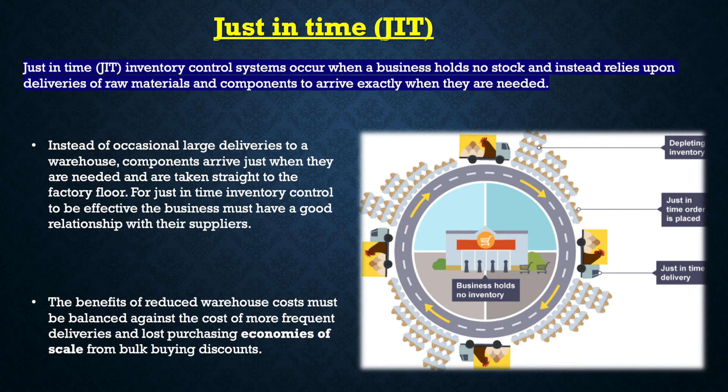For just in time inventory control to be effective, the business must have a good relationship with their suppliers. The benefits of reduced warehouse cost must be balanced against the cost of more frequent deliveries and loss of purchasing economies of scale from bulk buying discounts.